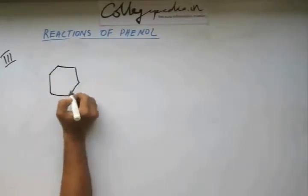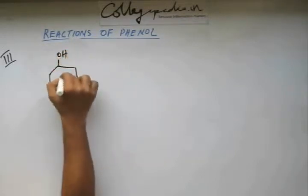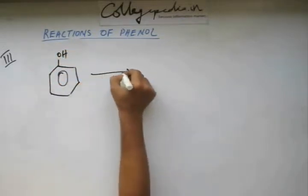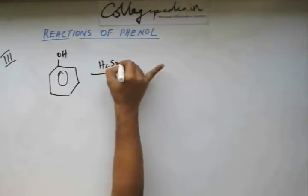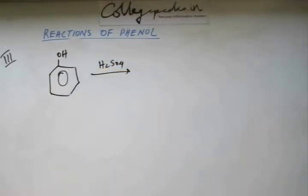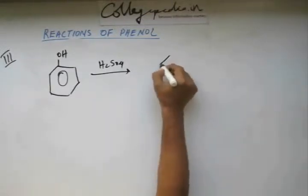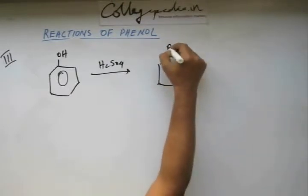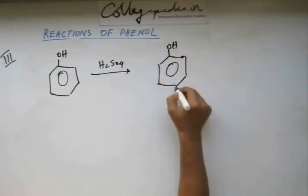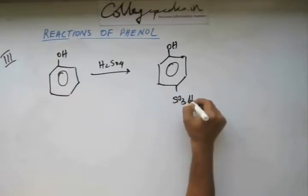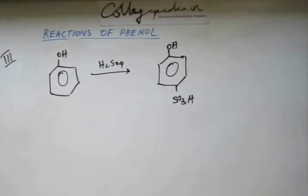On phenol, if you are adding sulfuric acid, then two sulfuric acid molecules will protonate, one will protonate the other and we are going to get sulfonium ion. That sulfonium ion is going to act as an electrophile and come to para position because of repulsion at ortho position.